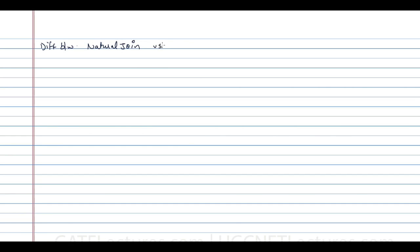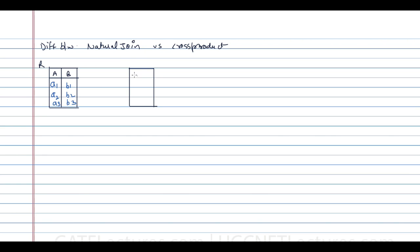Assume we have relation R with attributes A and B, with values A1 B1, A2 B2, and A3 B3. We also have a relation S with different attributes C and D, with values C1 D1 and C2 D2.